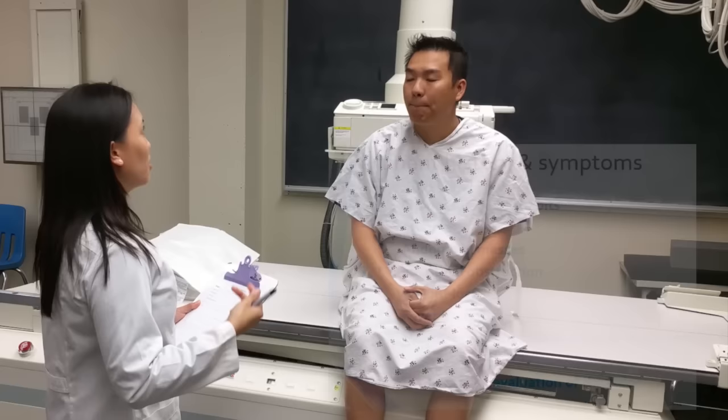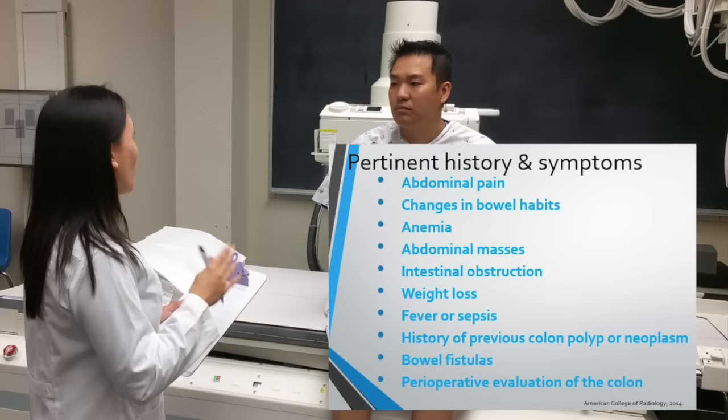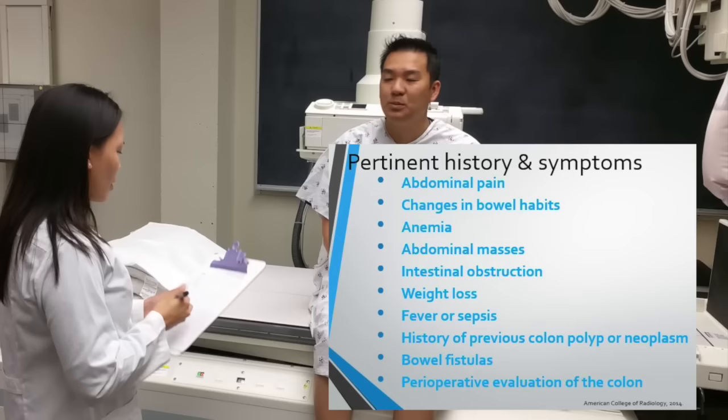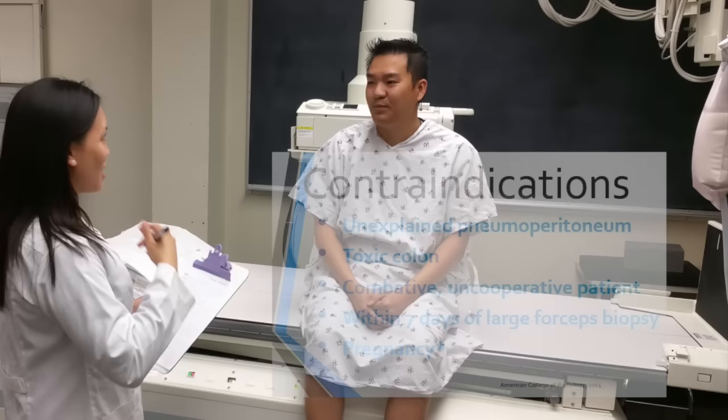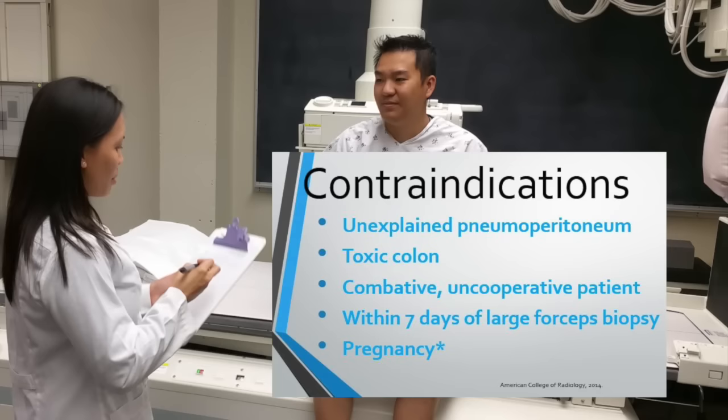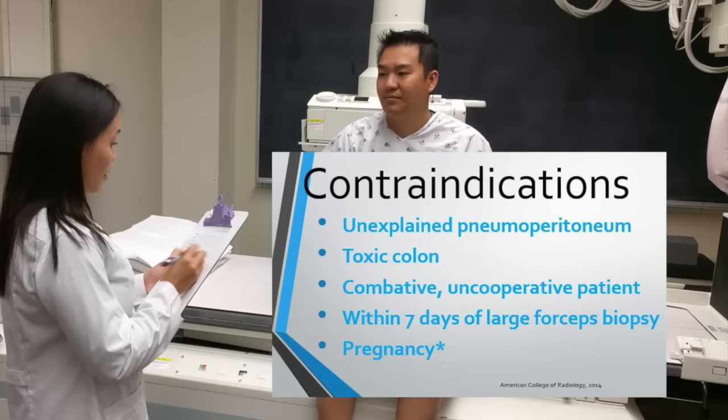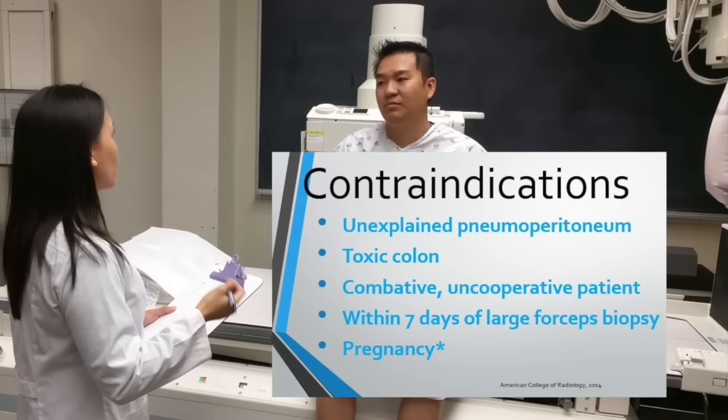Make sure to document any pertinent history or patient symptoms. Changes in bowel habits may include hematochezia, diarrhea, or constipation. You can come across other pertinent history, such as previous colon polyps or a family history of diseases involving the colon. The possible contraindications of the exam include, but are not limited to, unexplained pneumoperitoneum and toxic megacolon. The examination requires the patient to roll and turn on the table in order to coat the bowel, and cannot be completed with a combative or uncooperative patient.